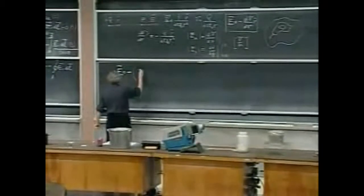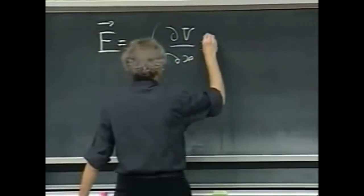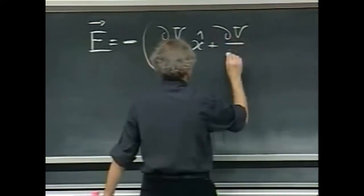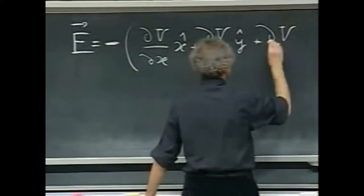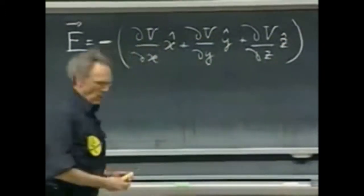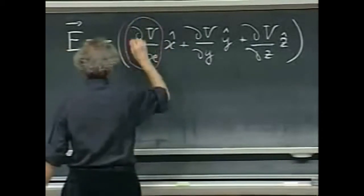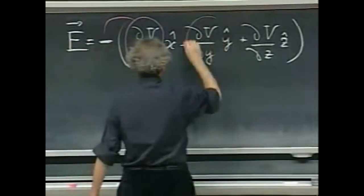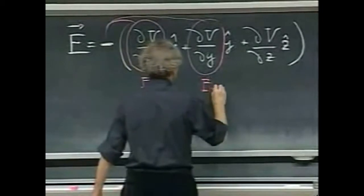and now we get dV/dx times x-hat, plus dV/dy times y-hat, plus dV/dz times z-hat. And what you see here, this first term here, including of course the minus sign, that is Ex. And this term, including the minus sign, that is Ey, and so on.